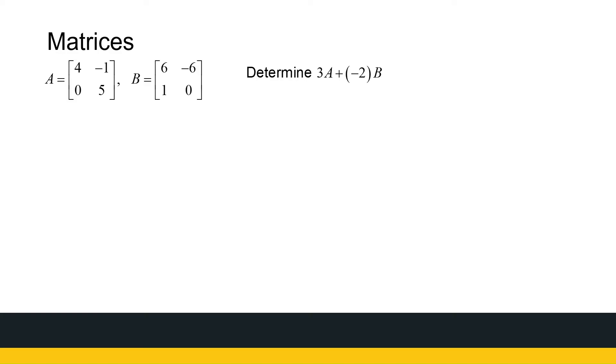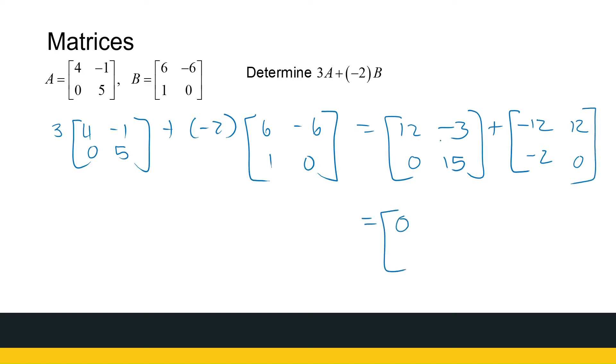So let's take a look. Here I've got two 2 by 2 matrices, A and B. We're asked to find 3A plus minus 2 times B. So let us see. 3A will be 3 times the matrix 4 minus 1, 0, 5, plus minus 2 times the matrix B, which is 6 minus 6, 1, 0. So that is 3 times 4 is 12, 3 times minus 1 is minus 3, 3 times 0 is 0, 3 times 5 is 15, plus the matrix minus 2 times 6 is minus 12, minus 2 times minus 6 is 12, minus 2 times 1 is minus 2, minus 2 times 0 is 0. Now I add them together and I get 12 minus 12, which is 0, minus 3 plus 12, which is 9, 0 minus 2, which is minus 2, 15 plus 0, which is 15.